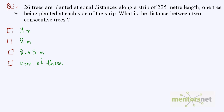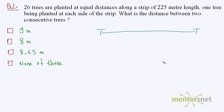Let us solve question number 2. It is given that 26 trees are planted at equal distances along a strip of 225 meters length. One tree is planted at each side of the strip, so inside there are 24 trees remaining.